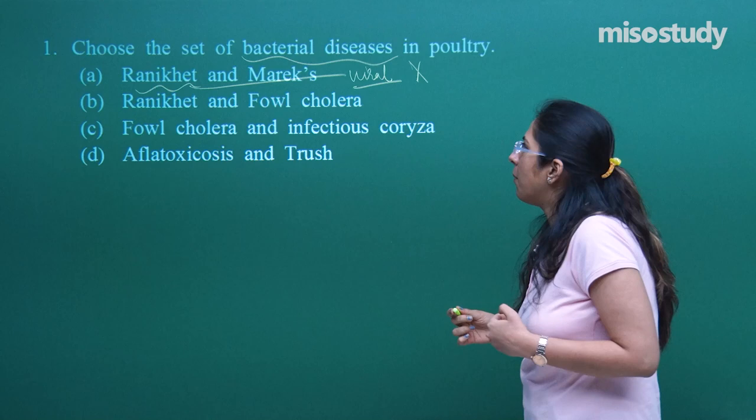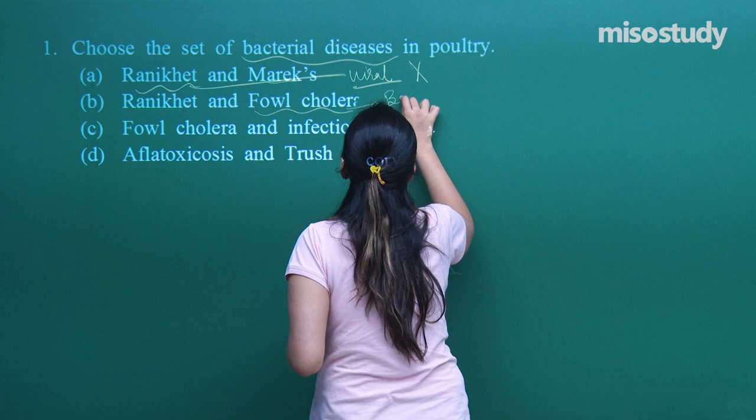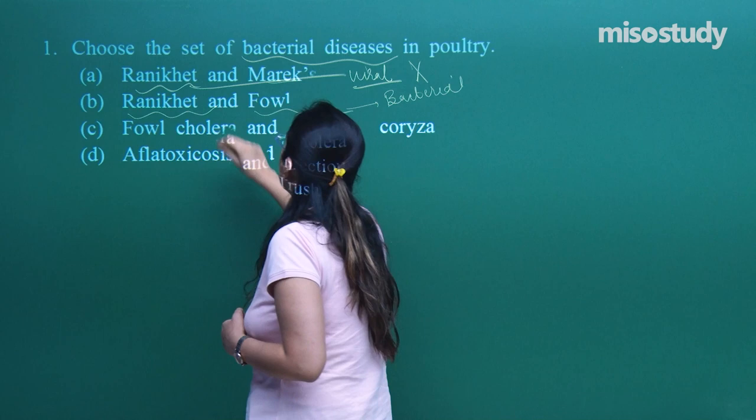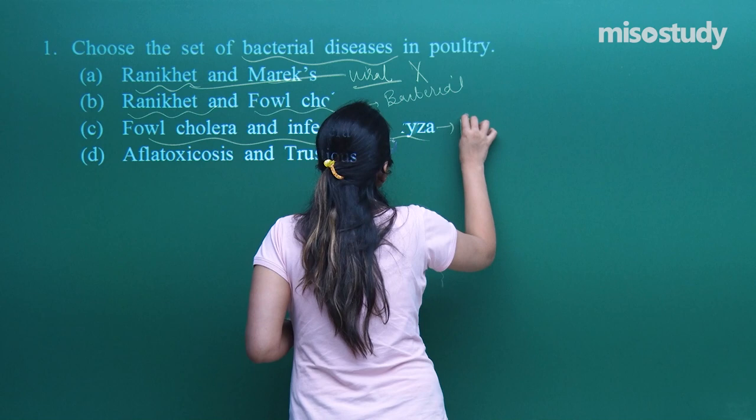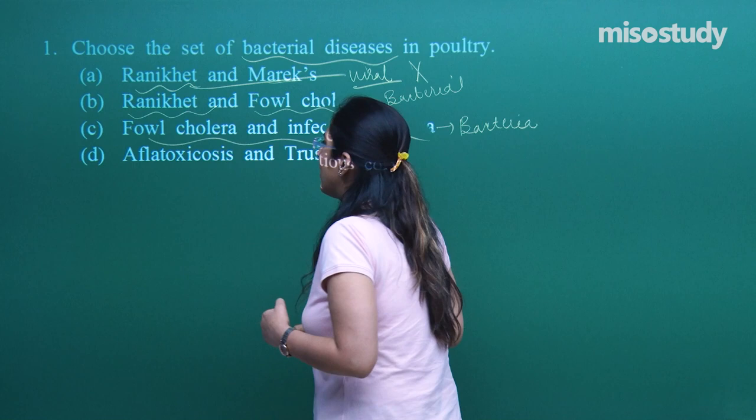We have to look for options where both diseases are bacterial. Option B has one bacterial and one viral disease. Looking at option C — fowl cholera and infectious coryza — these are what? These both are bacterial. So option C is the correct one.